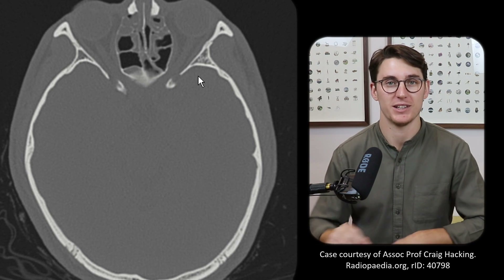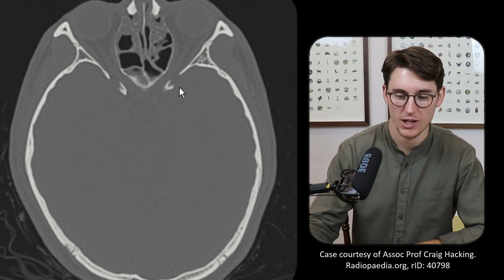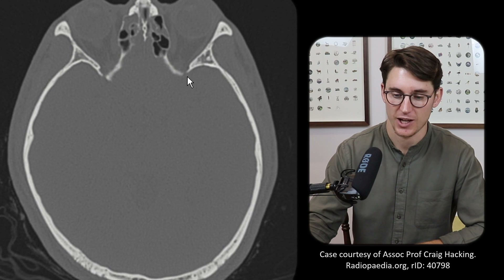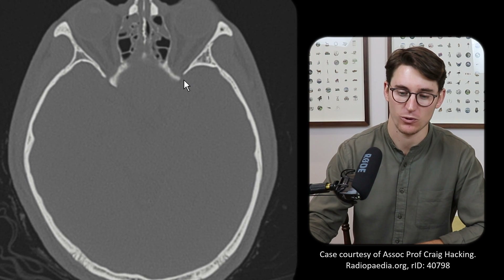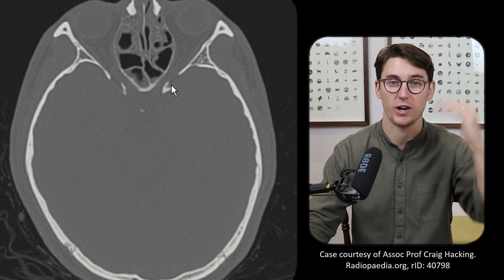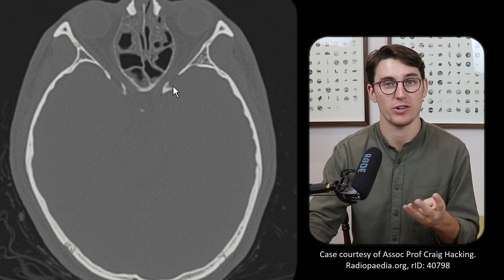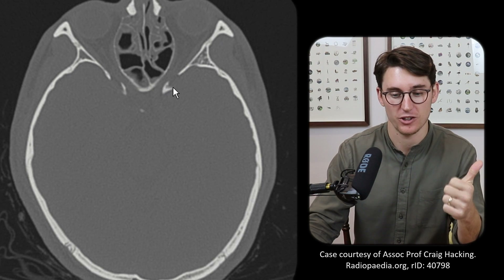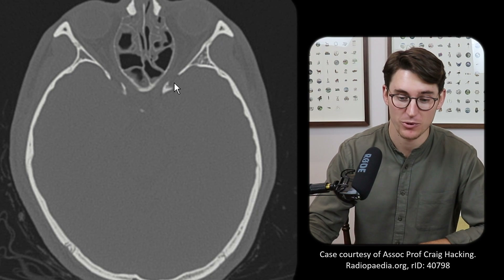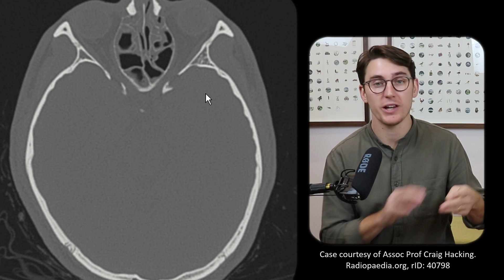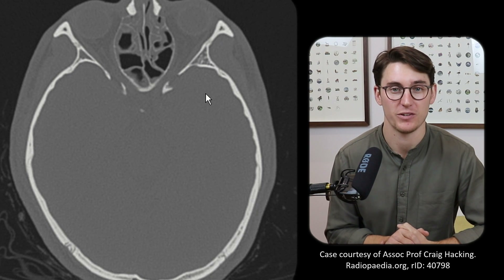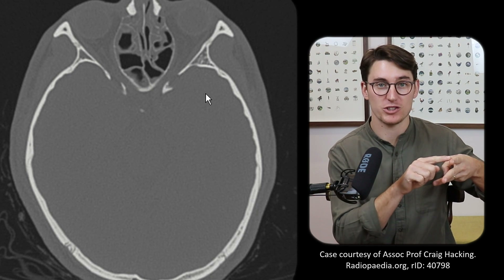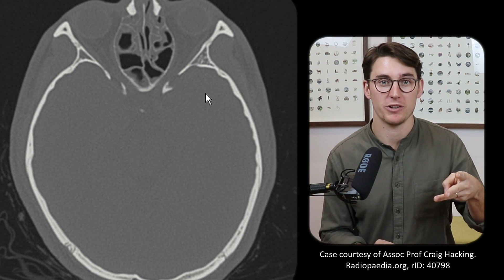Laterally to the optic canal and running superiorly is our superior orbital fissure. Because of its irregular shape and superior orientation, as we scroll up we see the fissure extending laterally. The superior orbital fissure carries cranial nerves 3, 4, and 6 — the oculomotor, trochlear, and abducent nerves — as well as the first division of cranial nerve 5, the trigeminal nerve. So the ophthalmic division of the trigeminal comes through this fissure, and the other two divisions will go through separate foramina.